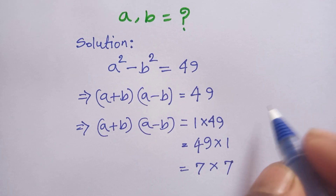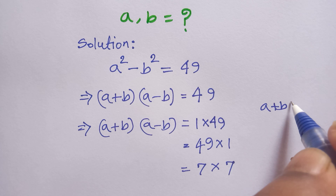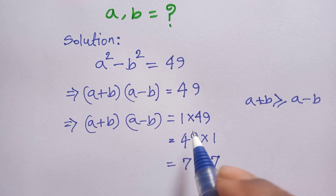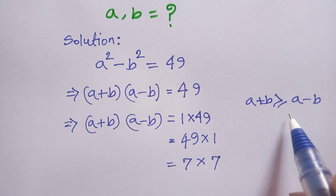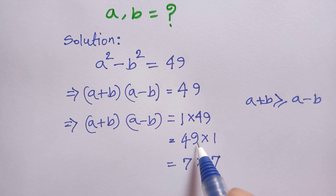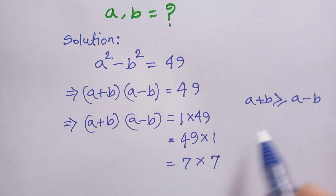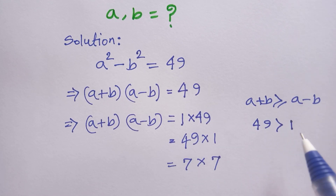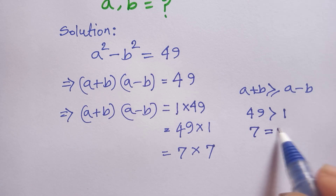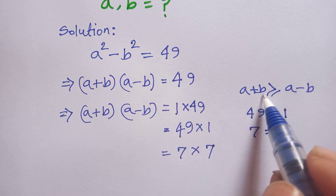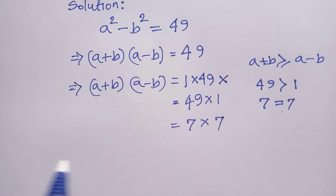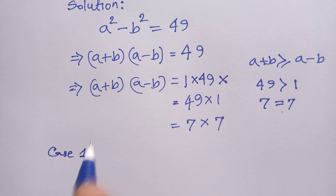Now, a plus b times a minus b equals 49. Note that a plus b is greater than or equal to a minus b. So 1 times 49 is not possible because 1 is less than 49. But 49 times 1 is possible because 49 is greater than 1, and 7 times 7 is also possible because 7 equals 7. So we have two valid cases.